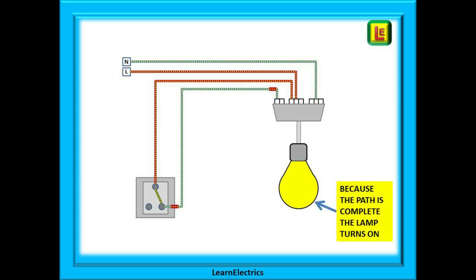An important note, if the electricity cannot complete the full circle from the live terminal in the consumer unit and back to the consumer unit on the neutral terminal, then no current will flow and the lamp will not come on. Neutral is just as important as the other live conductors.